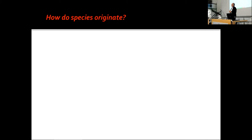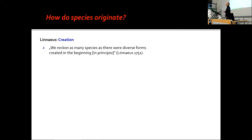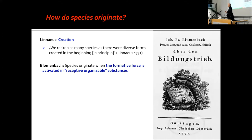Now we have seen how varieties originate by degeneration. But how do species arise in Blumenbach's theory? There is the traditional answer by Linnaeus, that there are as many species as different forms were created in the beginning. Blumenbach has a slightly different definition — he actually tries to give a natural explanation.